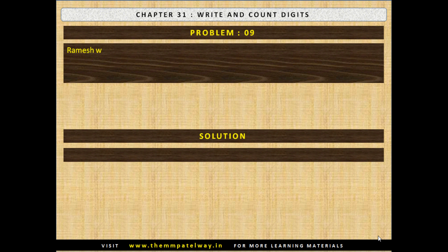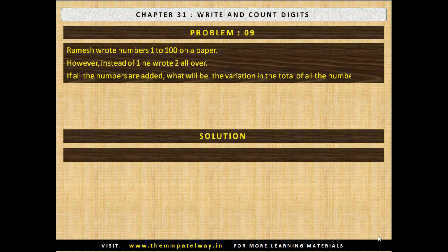Problem No. 9: Ramesh wrote numbers 1 to 100 on a paper. However, instead of 1, he wrote 2 all over. If all the numbers are added, what will be the variation in the total of all the numbers? Now stop the video and find the solution. The solution follows: there will be a variation of 220 — 10 in the unit column, 100 in the tens column, and 100 in the hundreds column.